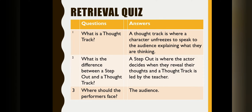And here are the answers. What is a thought track? A thought track is where a character unfreezes to speak to the audience explaining what they are thinking. What is the difference between a step out and a thought track? A step out is where the actor decides when they reveal their thoughts, and a thought track is led by a teacher. Where should the performers face? The answer is the audience. Please make sure you have the right answers written down before moving on.